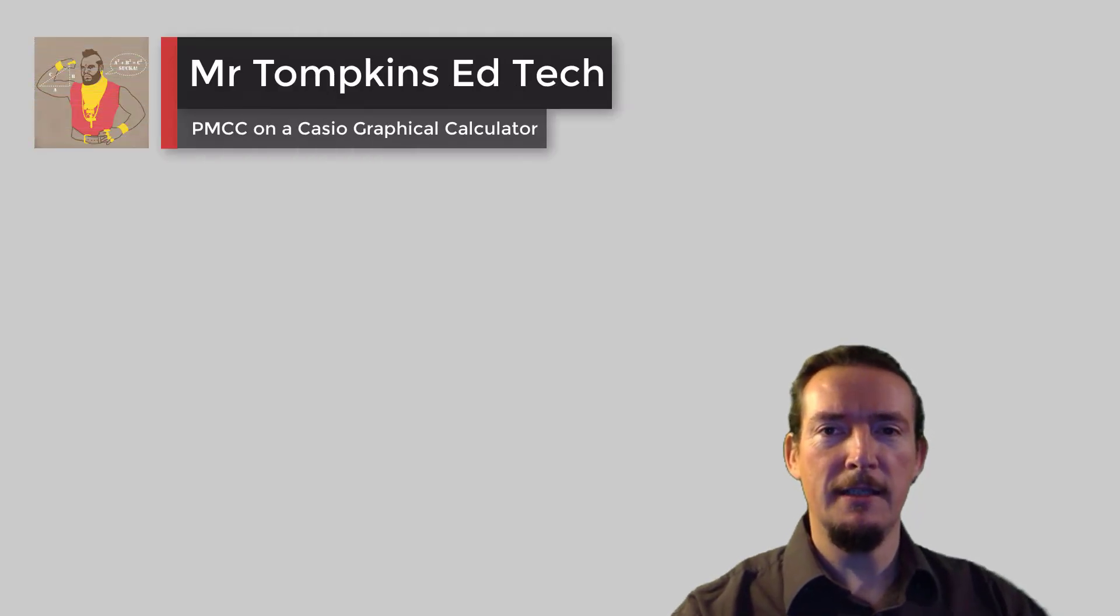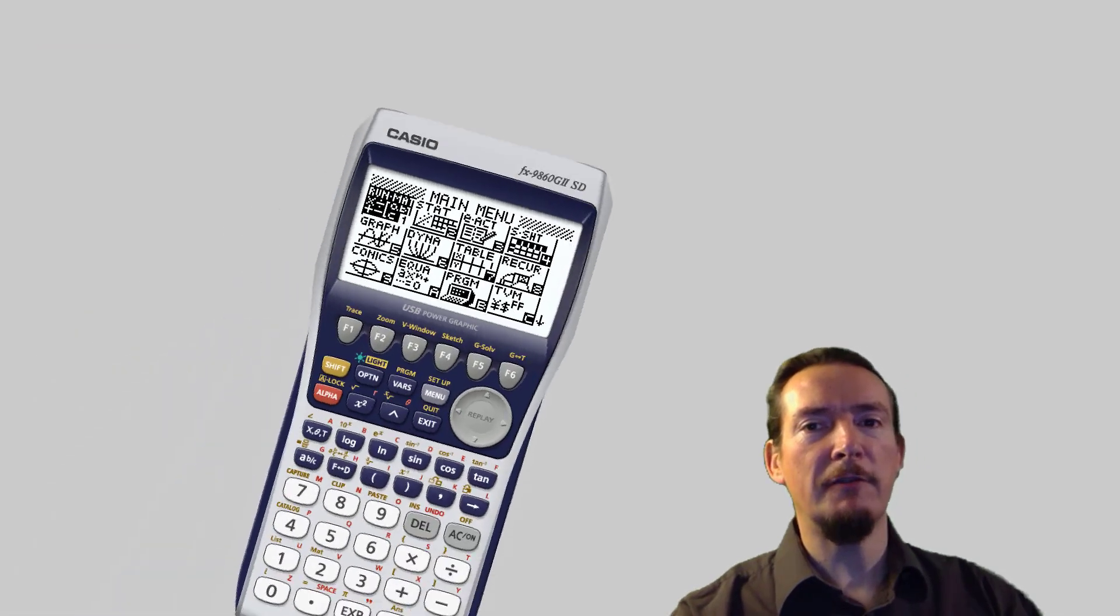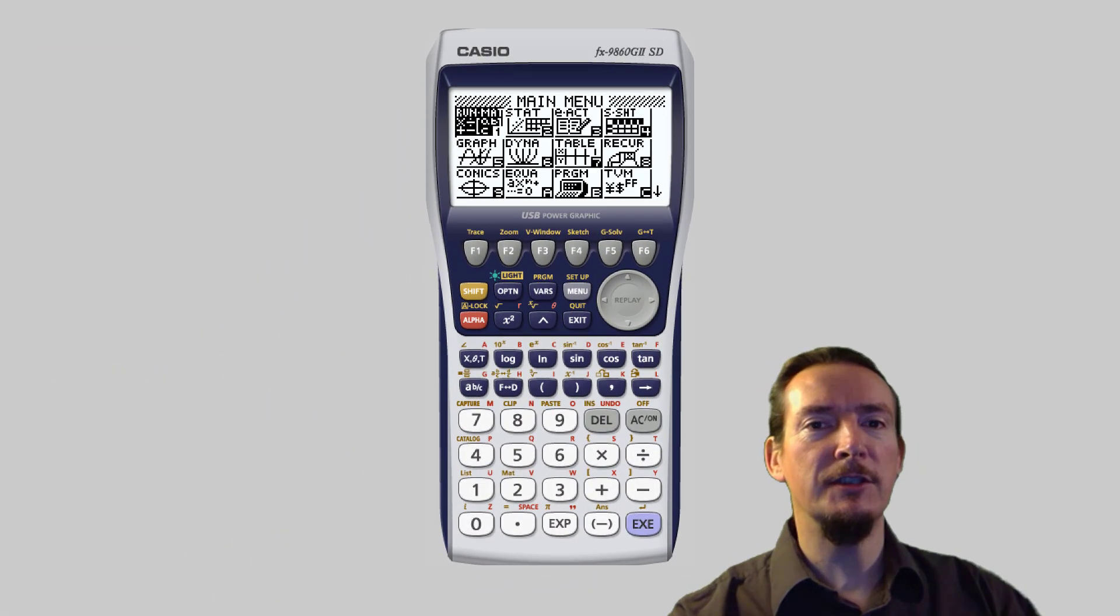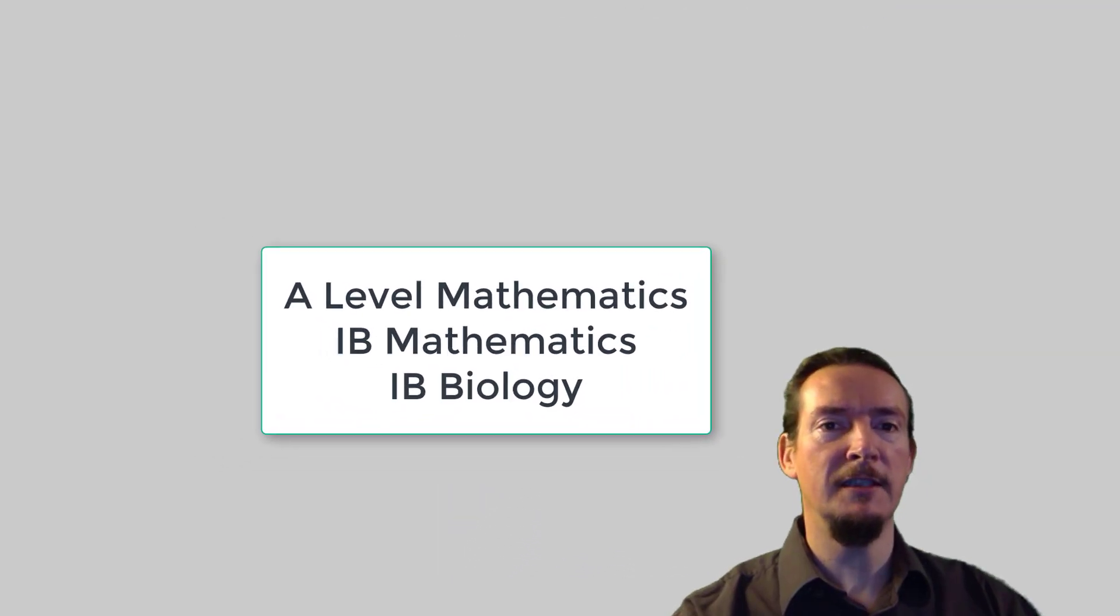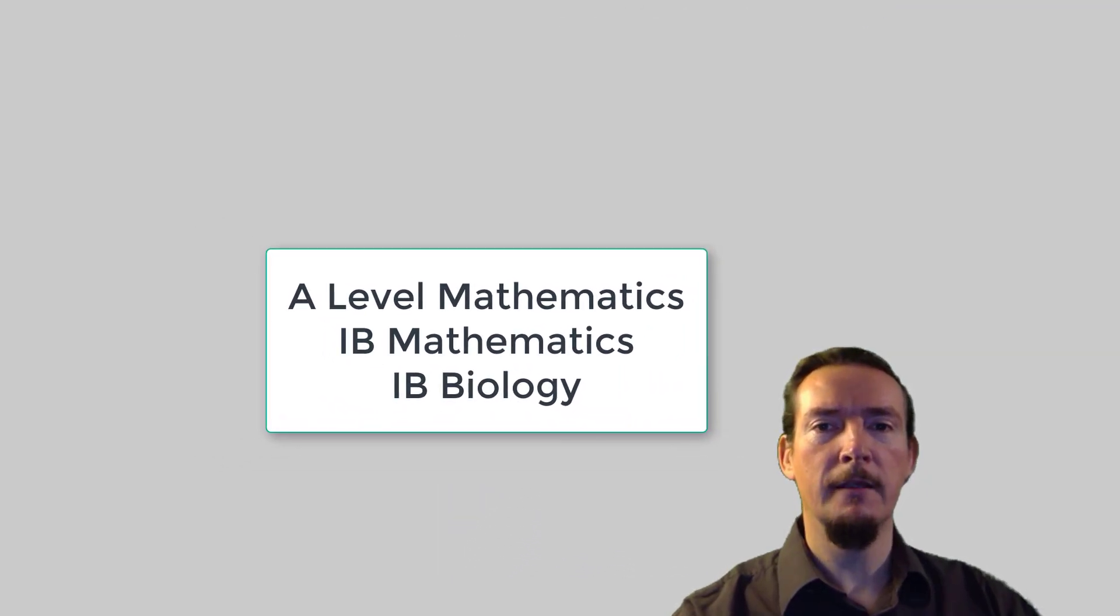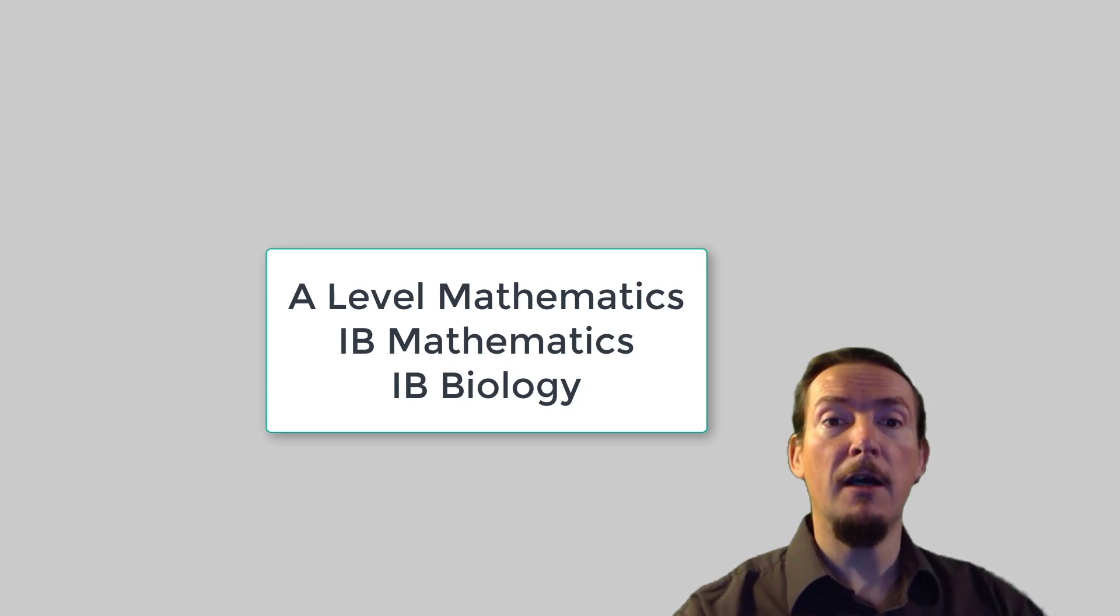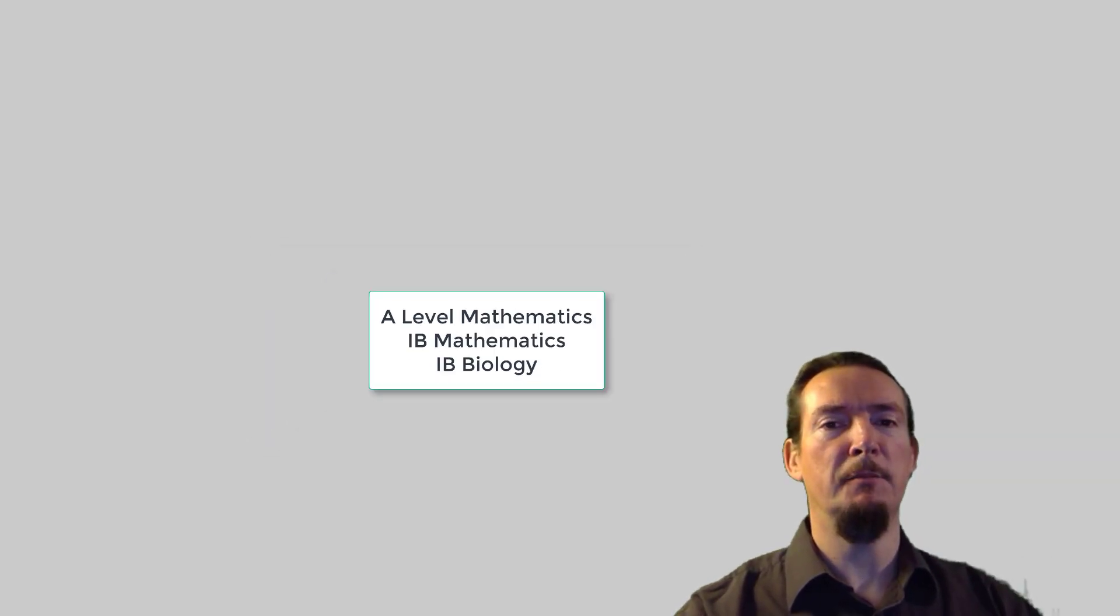Hello, and welcome to Mr. Tompkins EdTech. In this video, we will be taking another look at the Casio graphical calculator and how we can use it to solve exam-style problems taken from a real A-level S1 statistics and probability paper. For those of you following an IB higher-level mathematics or IB biology course, you will also find the style of the question spookily familiar, so please keep watching.